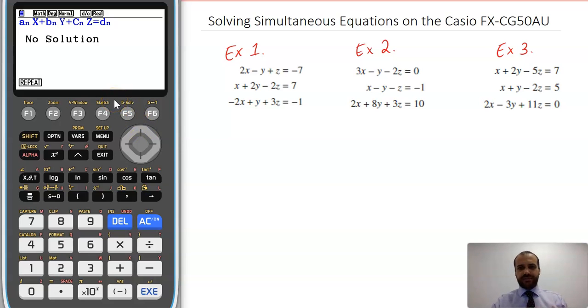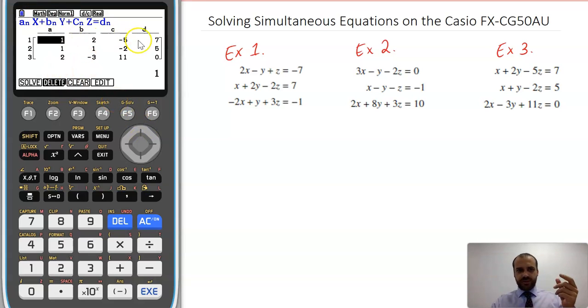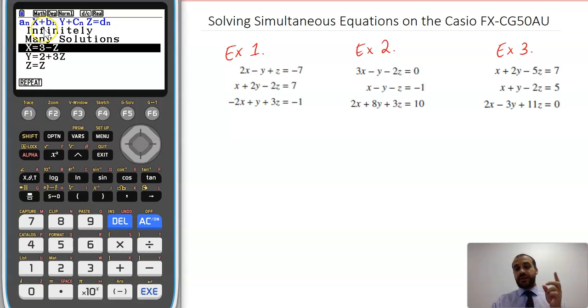Let's see what that looks like on a calculator. So I went back, I cleared it all, I entered all of the values. So these values are these values here. Watch what happens when I press solve. Infinitely many solutions. And it says that the value for x is 3 minus this z here. y is equal to 2 plus 3z, and z is equal to z.